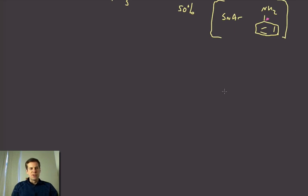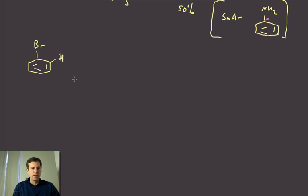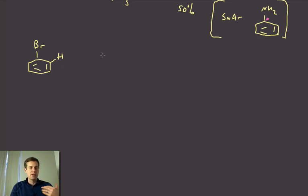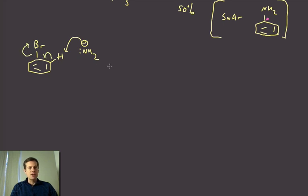So what exactly is benzyne? All the evidence points to the fact that in cases where you have a good leaving group on an aromatic ring with an adjacent proton and a very strong base — something like amide — that base can deprotonate at the ortho position to the leaving group. You can then eliminate HBr from the molecule.